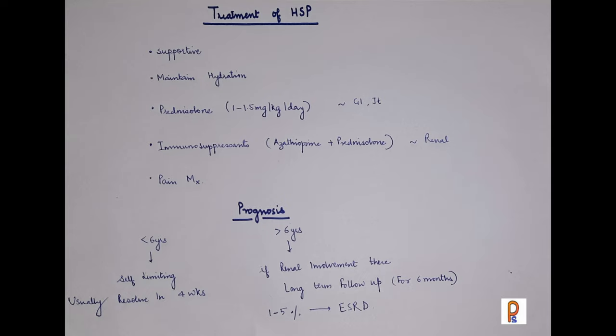Regarding prognosis, if the age of the child is less than 6 years, the disease is usually self-limiting and resolves in about 4 weeks. However, if the child is more than 6 years and renal involvement is present, long-term follow-up for renal involvement up to 6 months is required, because in 1 to 5% of cases they may end up with end-stage renal disease.